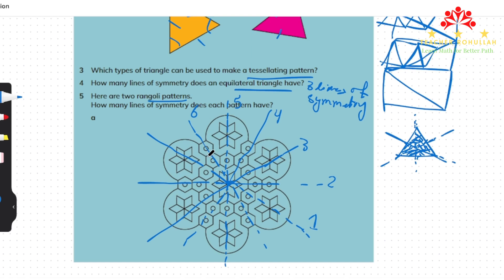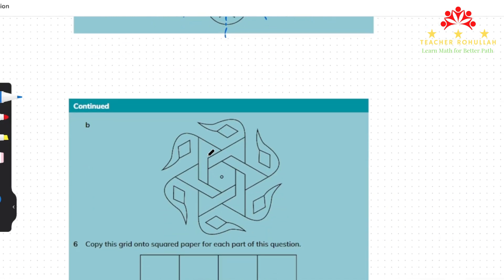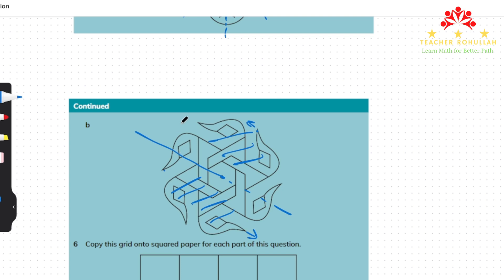Now let's move to part B. This is also a rangoli but here we do not have any lines of symmetry. For example, if we draw a line crossing from the center and look at both sides, this side is not the same as the other side. If we fold it, they will not lie exactly on each other - this tip is heading left but the other tip is heading right. There's a point on one side but nothing on the other, so it has no lines of symmetry.